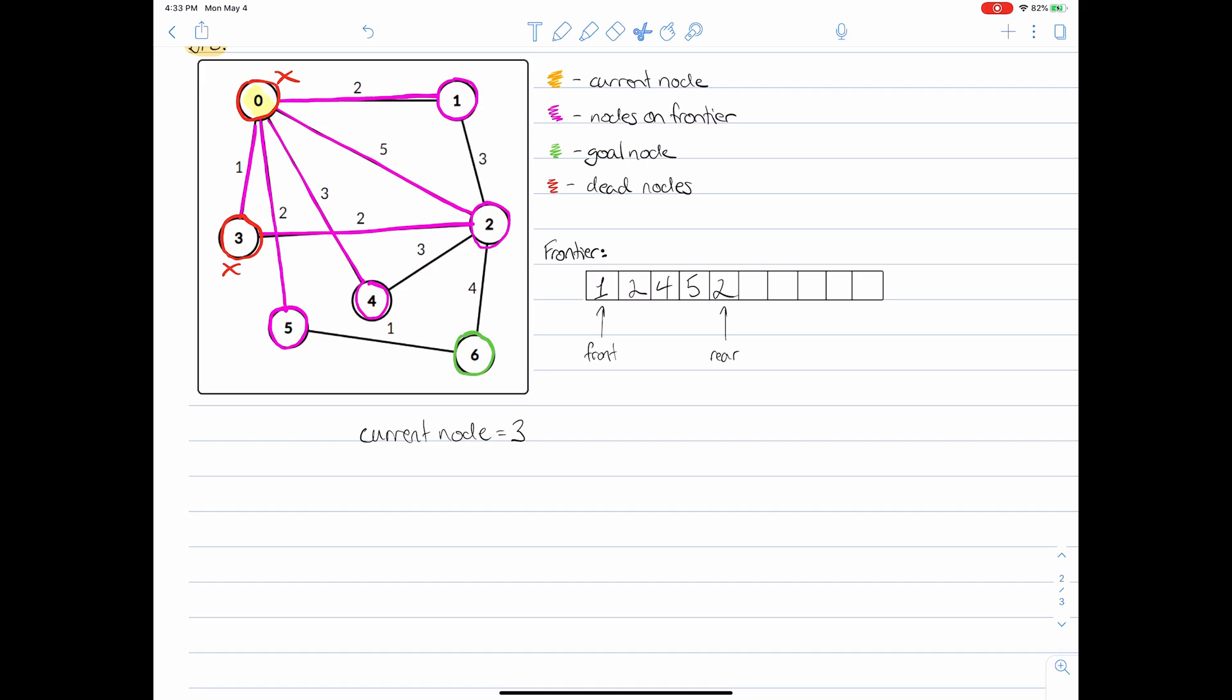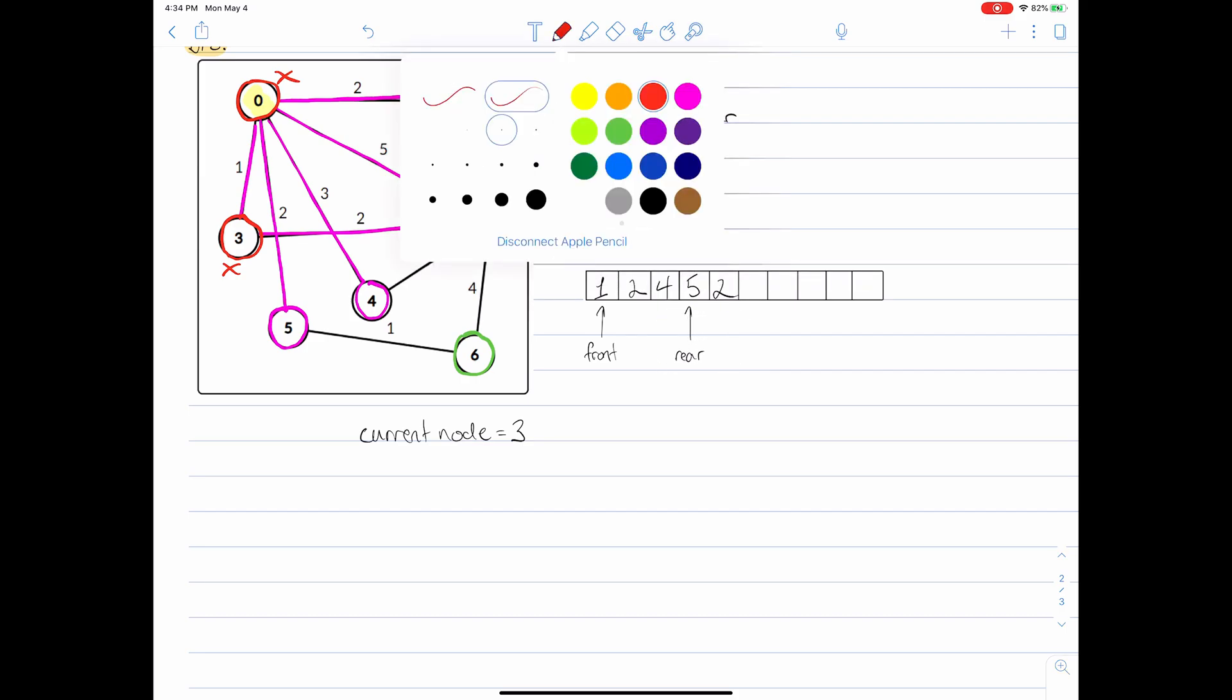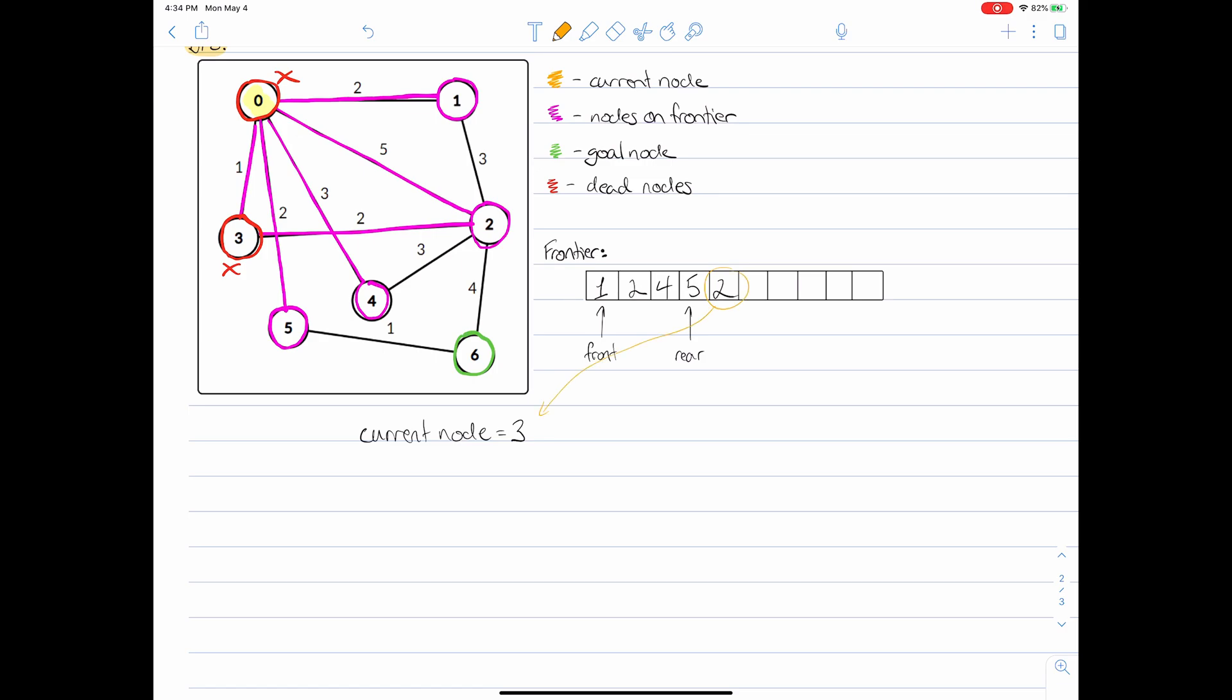Now once again we're going to dequeue. Remember, when we dequeue, we just slide the rear back. And we pop our friend number two right up. Now our current node becomes node two.